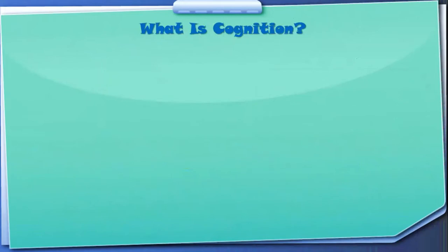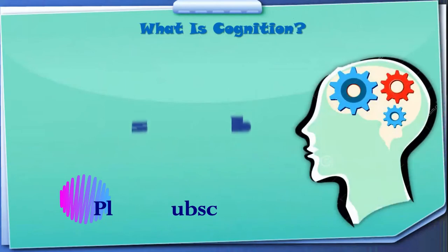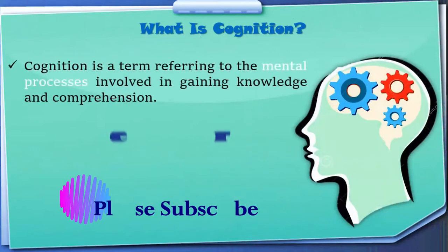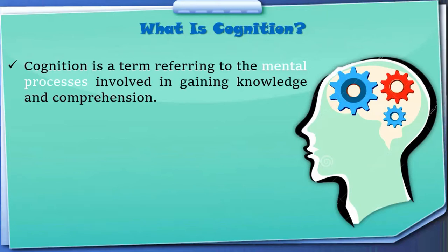What is cognition? Cognition is a term referring to the mental processes involved in gaining knowledge and comprehension. Basically, when we talk about cognition, it is all about the mental processes involved in gaining knowledge and comprehension of language or whatever we have been learning.